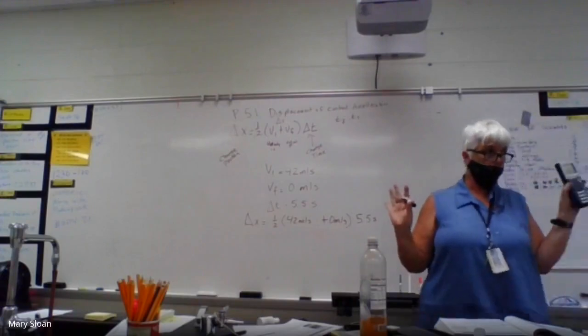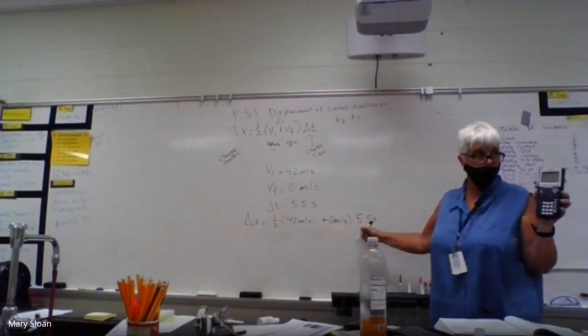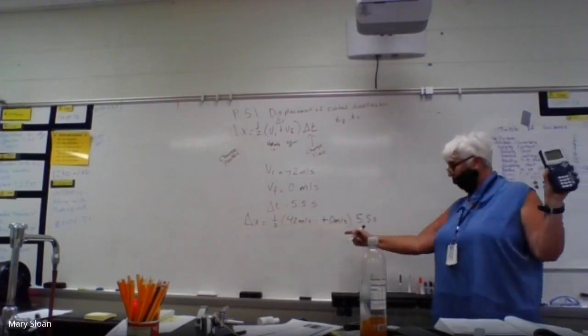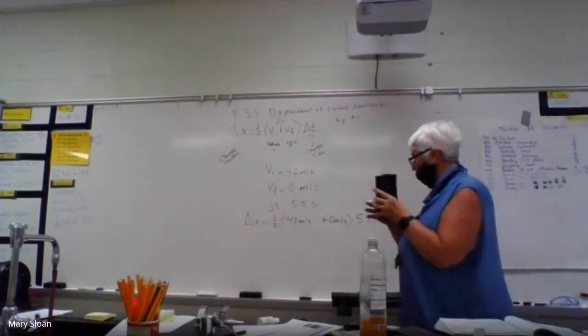We're still trying to find change in position. So we're going to say one-half times velocity initial is 42 meters per second, and we're going to add zero meters per second, then multiply by 5.5 seconds. Put it in your calculator and let's see what we get.